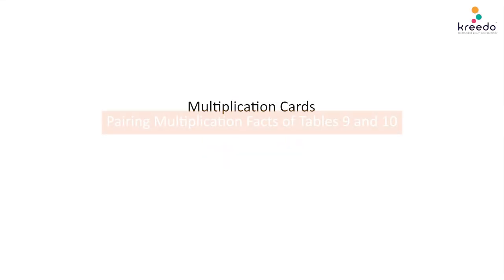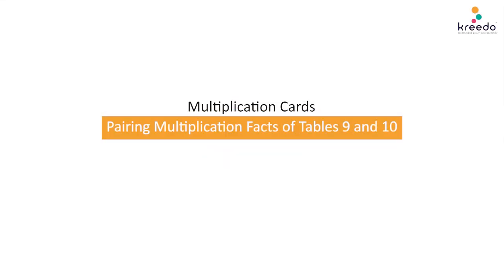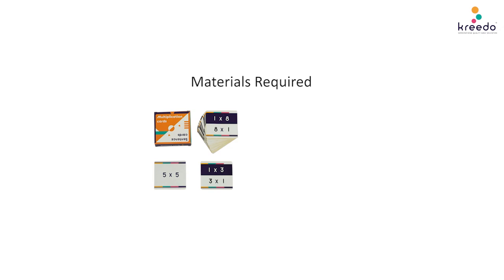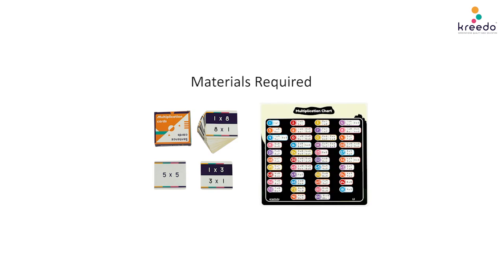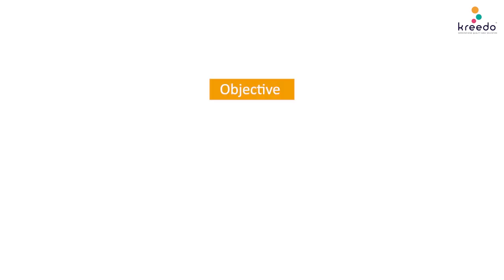Multiplication Cards Game. Name: Pairing Multiplication Facts of Tables 9 and 10. Materials Required: Multiplication Cards and Multiplication Fact Chart. Objective: To read the tables of 9 and 10.